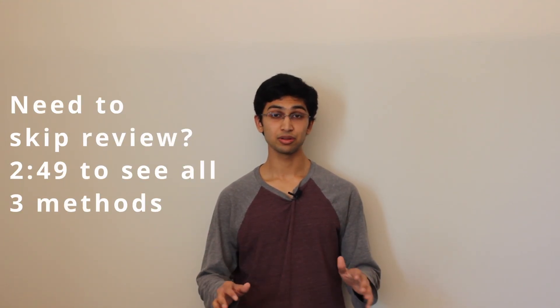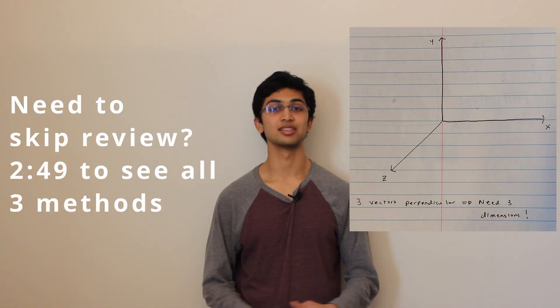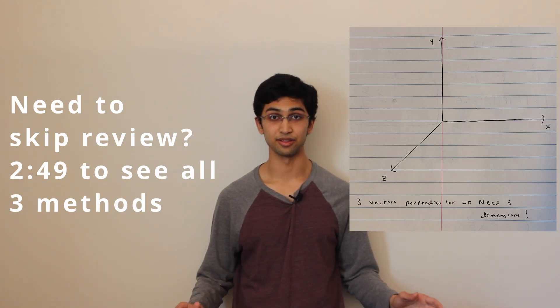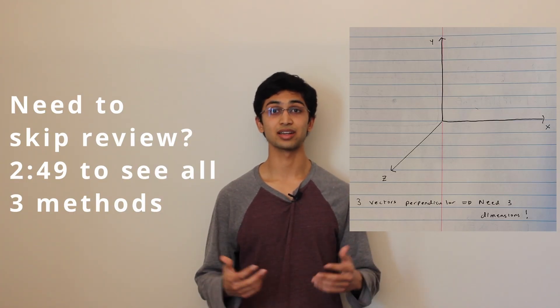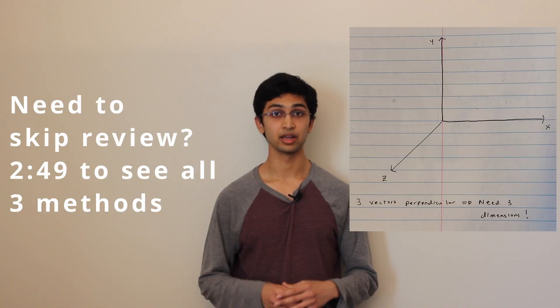Quick review: the reason we need a cross product is to multiply two vectors together such that we get a third vector that is perpendicular to both of the first two. However, when we do this we run into a pretty big issue. When we look for that third vector perpendicular to the first two — that resultant vector — we have two options for how to orient it.